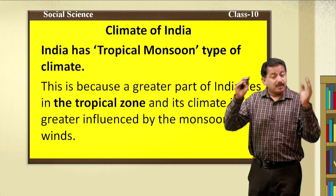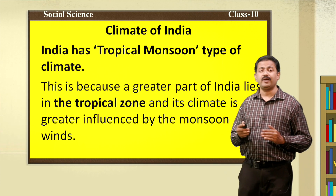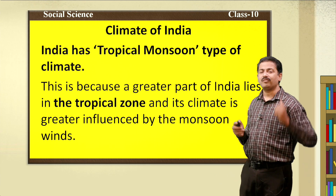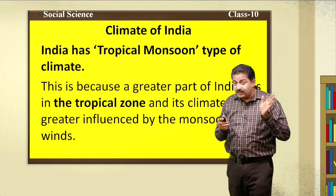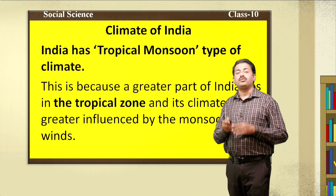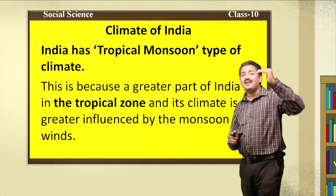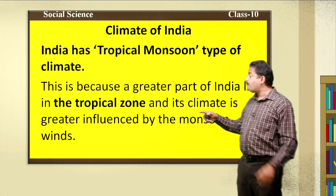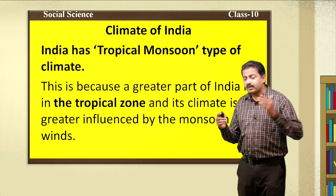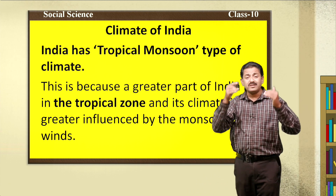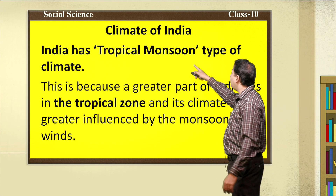The third factor is monsoon winds. Monsoon winds play a vital role in deciding the climate of a place — which type of winds are blowing towards a particular area decides the climatic type. Whether the place is influenced by southwest monsoon, northeast monsoon, or temperate winds — all these factors decide the climatic condition. Keeping these factors in mind, India's climate is called tropical monsoon type of climate. India has tropical monsoon type of climate because the major area of India is influenced by southwest monsoon.